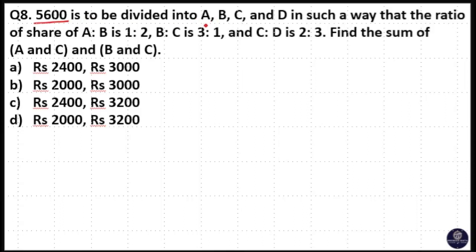Rupees 5600 is divided into A, B, C, and D in such a way that the ratio of shares of A:B is 1:2, B:C is 3:1, and C:D is 2:3. Find the sum of A and C, and B and C. So here, four people: A, B, C, D.